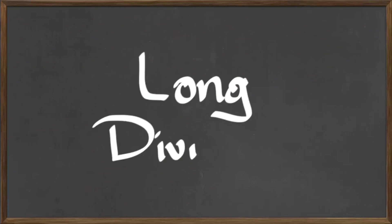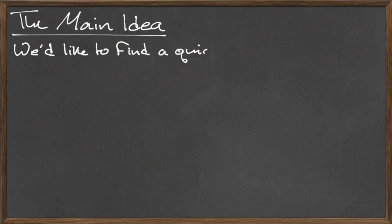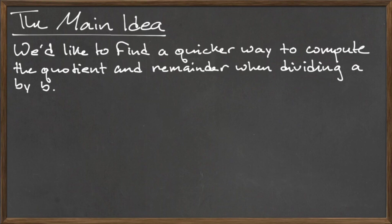In this video, we discuss long division for integers. In a previous video, we discussed an algorithmic way to compute the quotient and remainder for integer division. While this is an effective process, it can be very time consuming, as we often have to run through a loop multiple times.